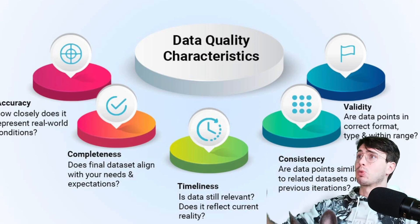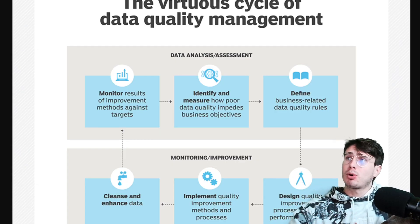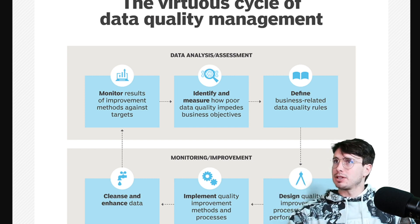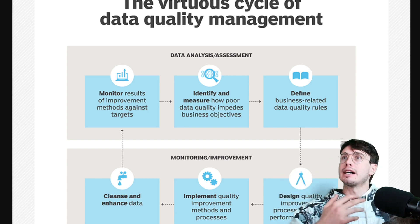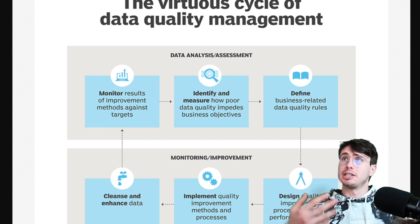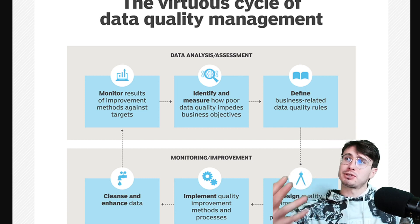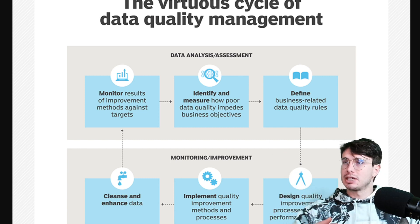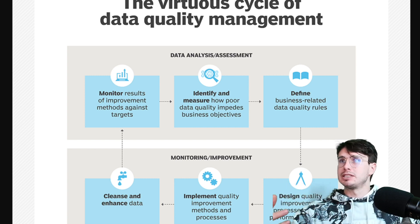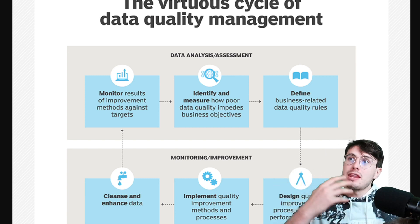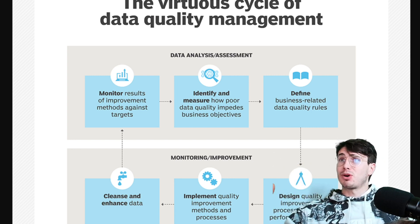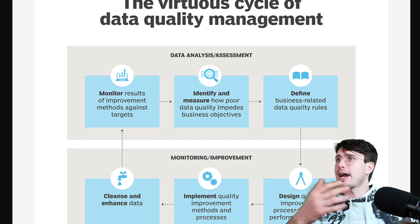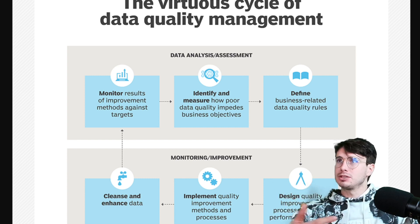The importance of implementing these checks — making sure your data is accurate, timely, and complete — introduces a virtuous cycle of data quality management. As you design new processes based on data quality standards, implement them, cleanse and enhance that data, you can monitor how data quality has improved your analysis and the accuracy of your ML models. Easy metrics to target include things like the R2 score of an ML model, which measures how accurate the model was, and you can track how that changes over time as you implement data quality checks.